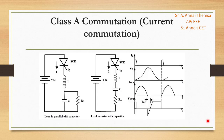The first one is Class A commutation, also called current commutation. Here the SCR is self-commutated by a resonating load, and it is one of the frequently used thyristor commutation techniques. If the thyristor or SCR is triggered or turned on, then anode current will flow by charging the capacitor C. The second order underdamped circuit is formed by the inductor, capacitor, and resistor.